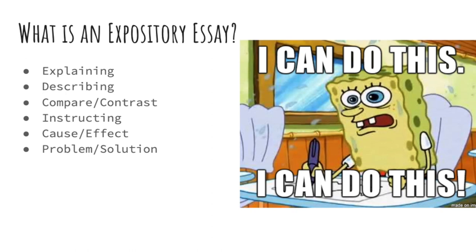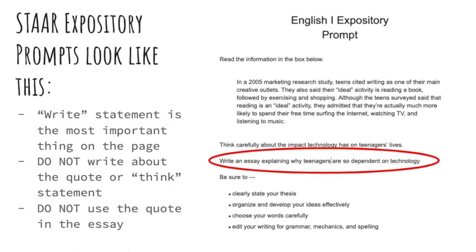If you are about to write your first expository essay for this class, start thinking about the prompt you are going to choose. This is what a STAAR expository prompt looks like. Typically you're given a quote, then a think statement, then a write statement. The write statement is what's most important. You cannot write about the quote or the think statement — those are just a stimulus. You can put a big X through that part and just circle your write statement, because you're not allowed to include the quote or think statement in your essay.